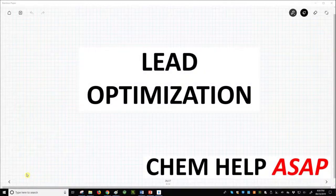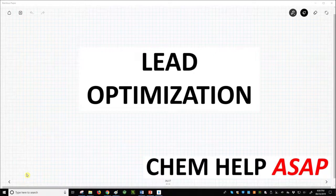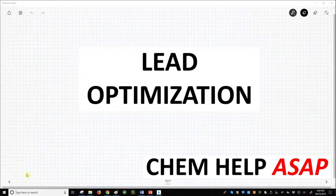Welcome to ChemHelp ASAP. The lead optimization process strives to improve the potency of a molecule against a target protein while also improving pharmacokinetic properties and keeping toxicity to a minimum.